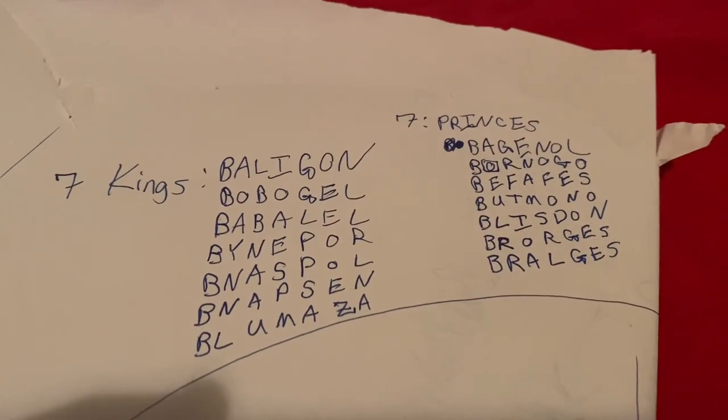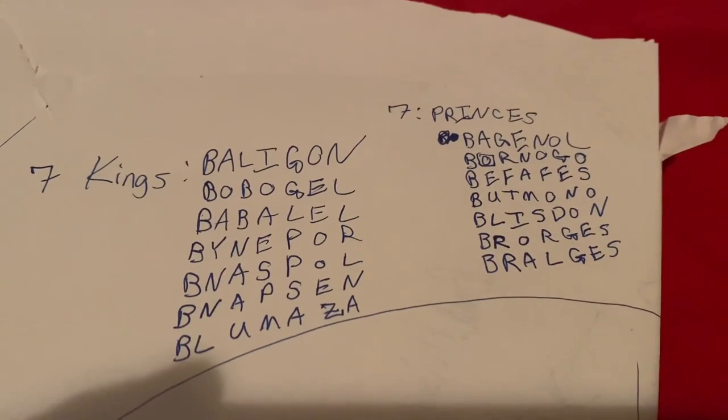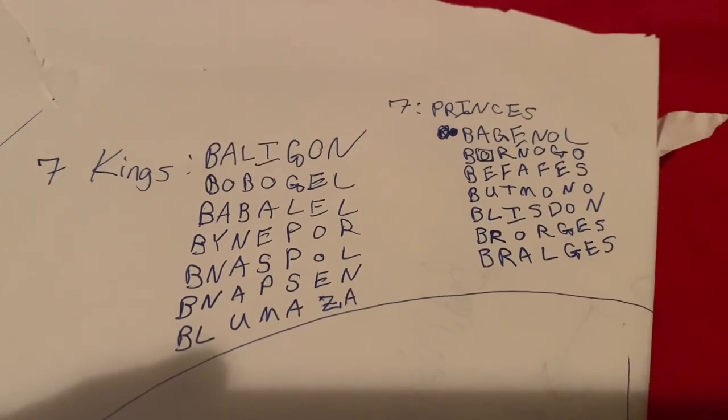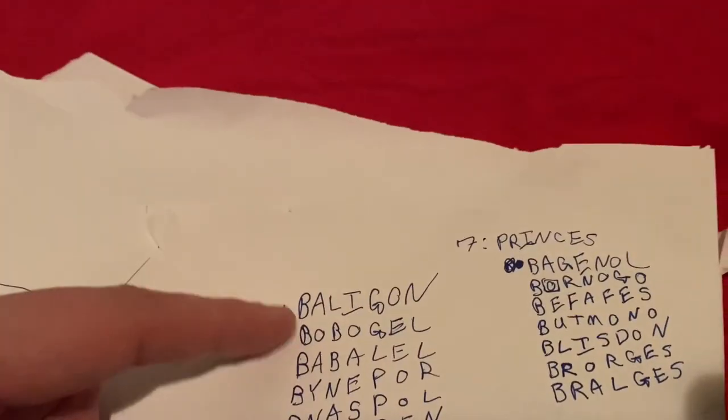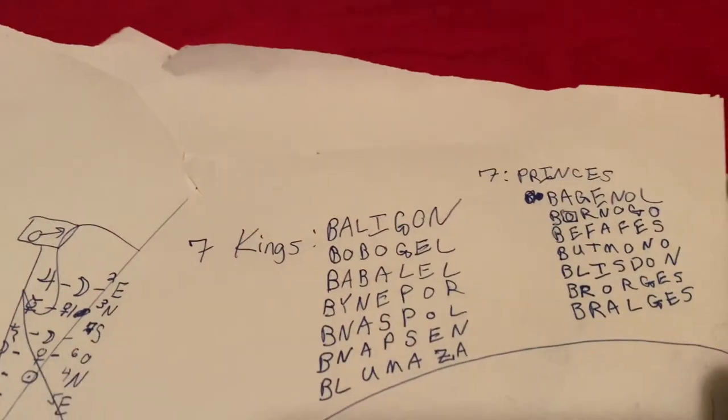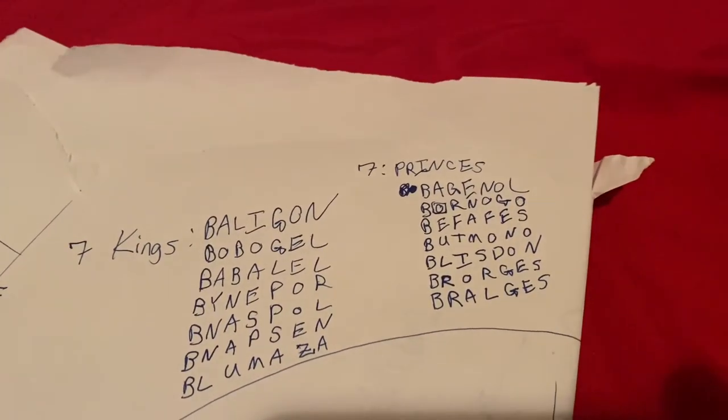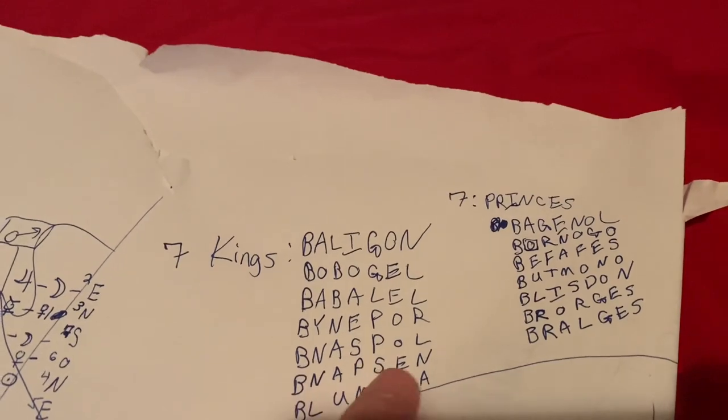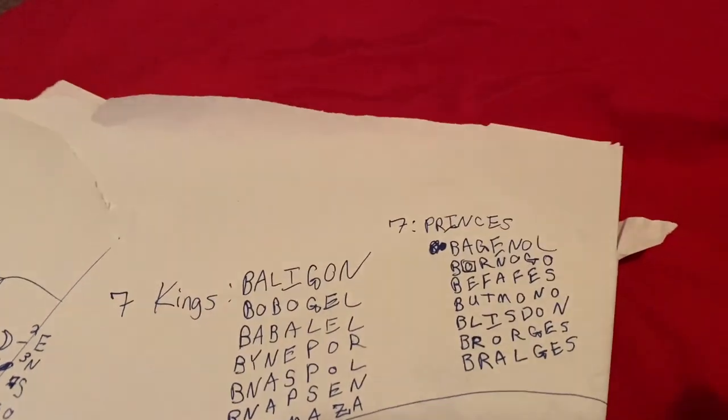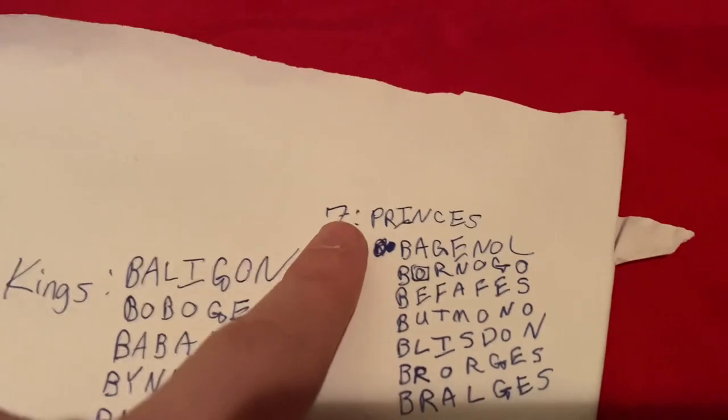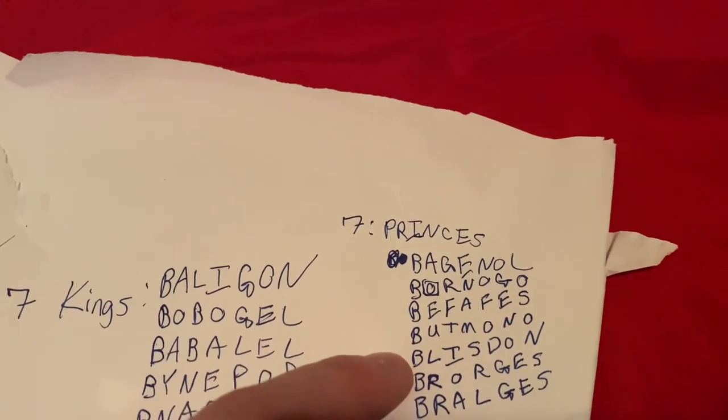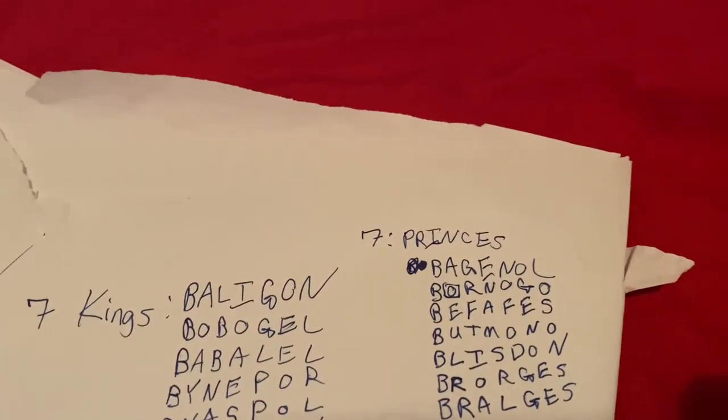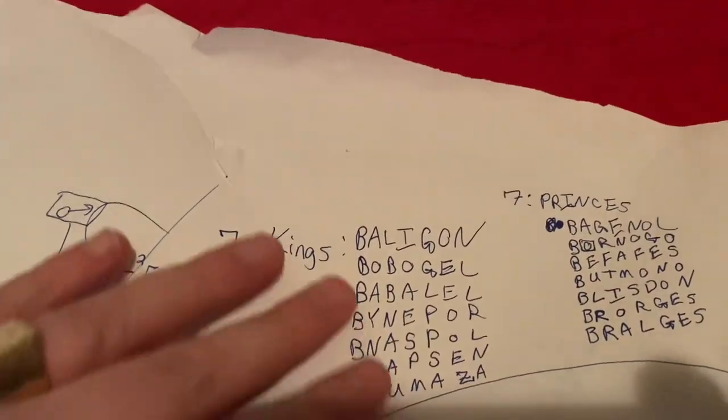As I mentioned, the angels that are part of the Heptarchy, the main players are the seven kings and the seven princes associated with them, and this is King Baligon, Bobogel or Bobogel, etc., all the way down through there. And you notice that some of them are kind of difficult, so Benaspal or Benaspal, something like that would be how you would pronounce that, and then you have seven princes here, Prince Baganol, Prince Bornogo, Befafes, etc.